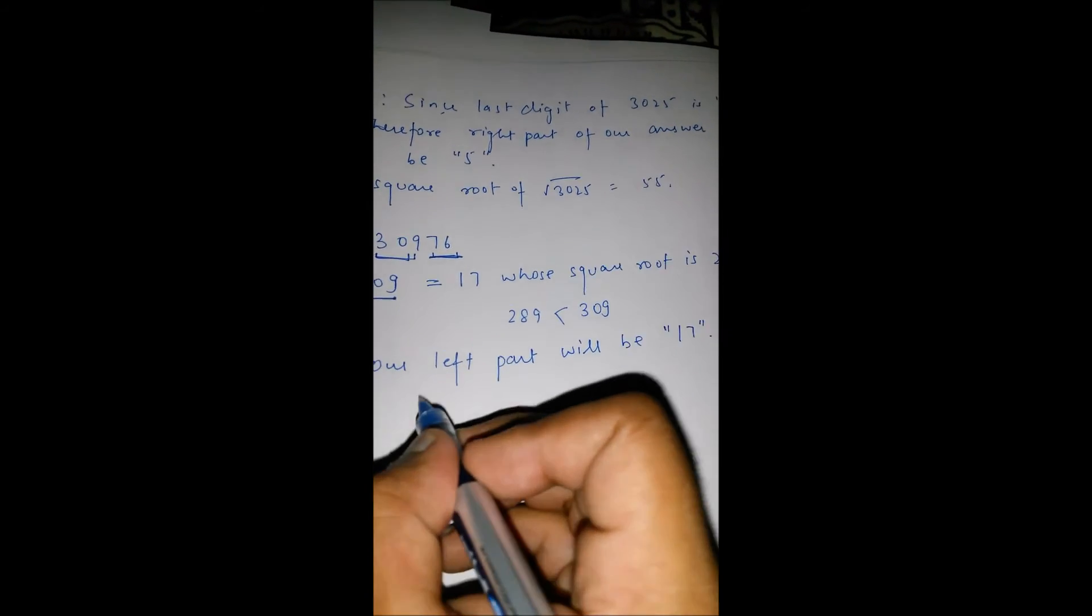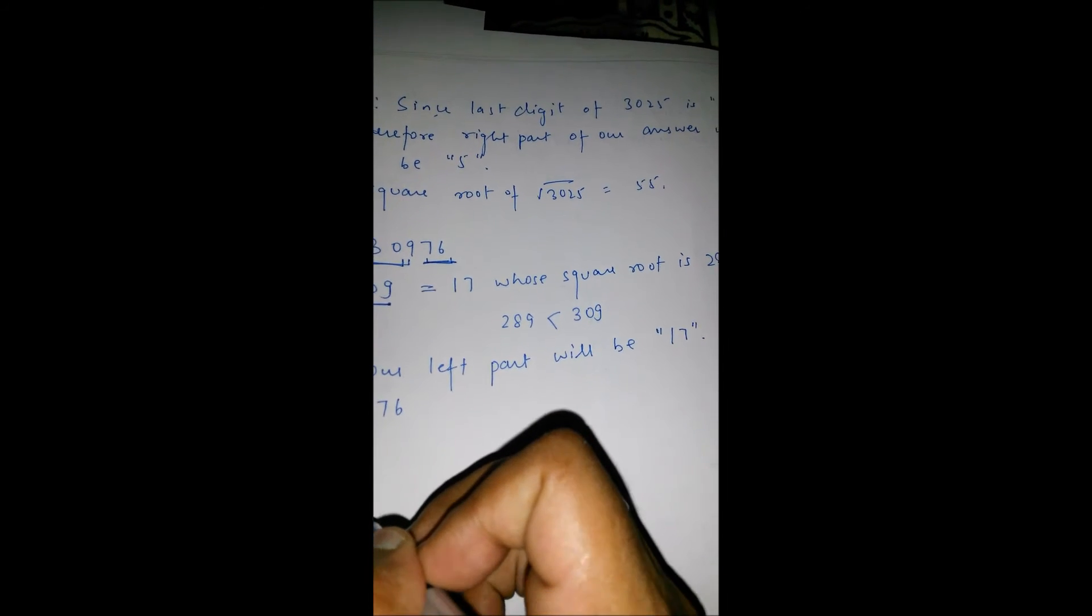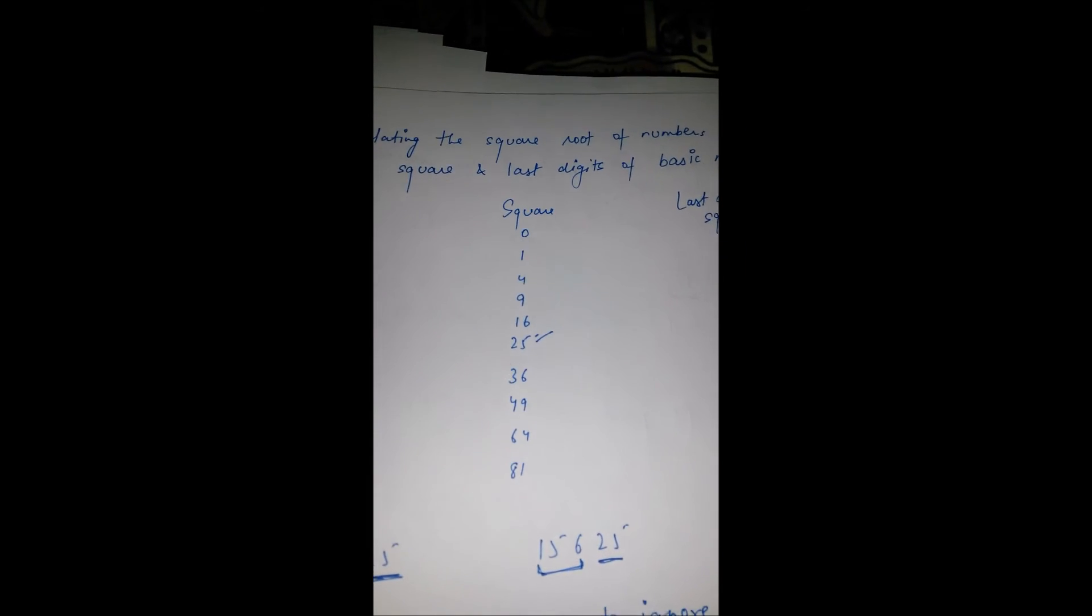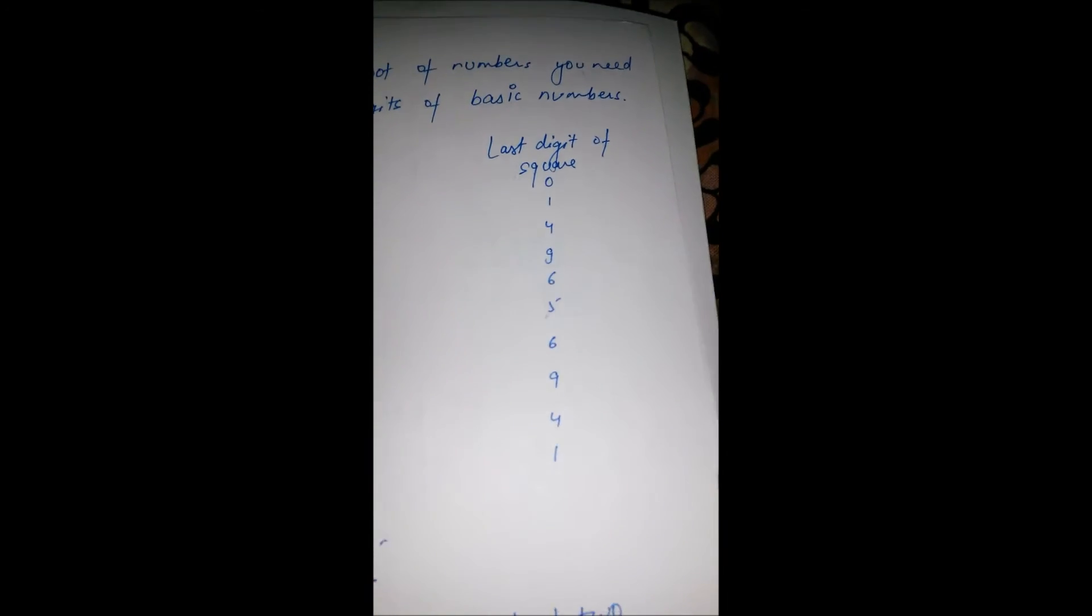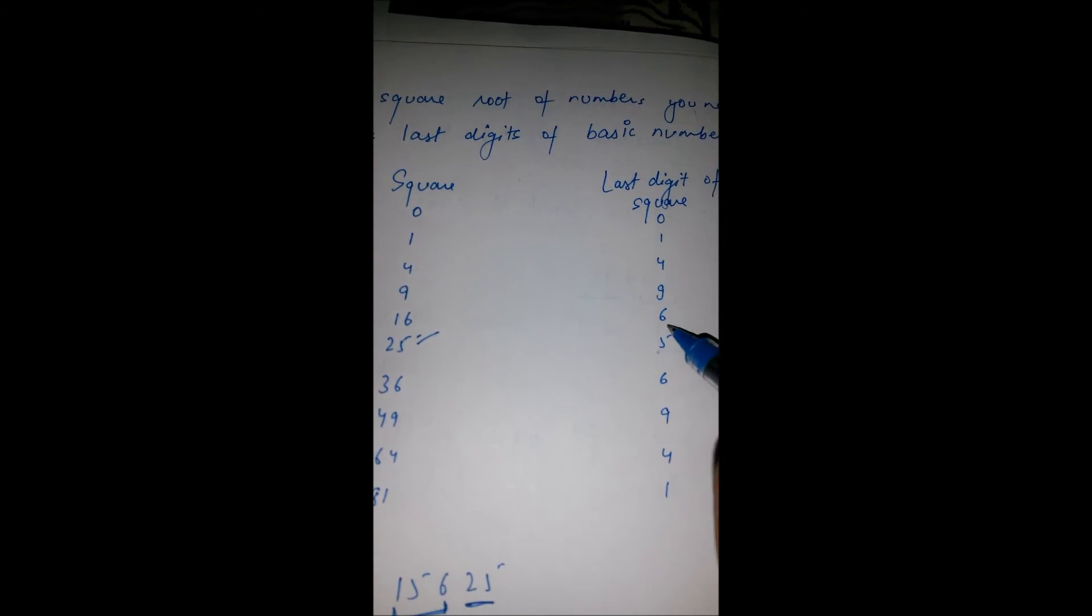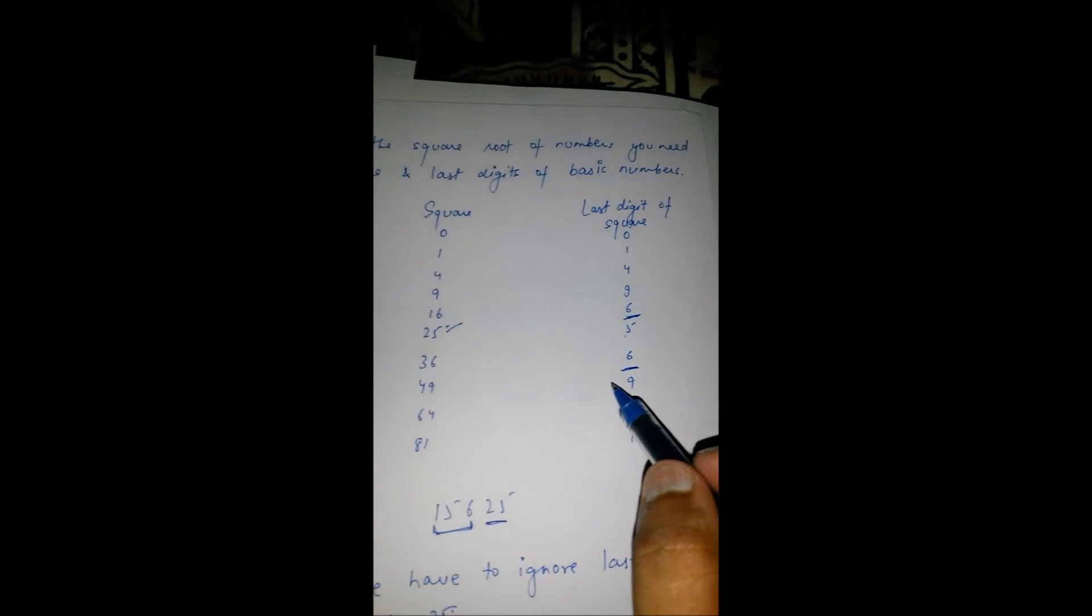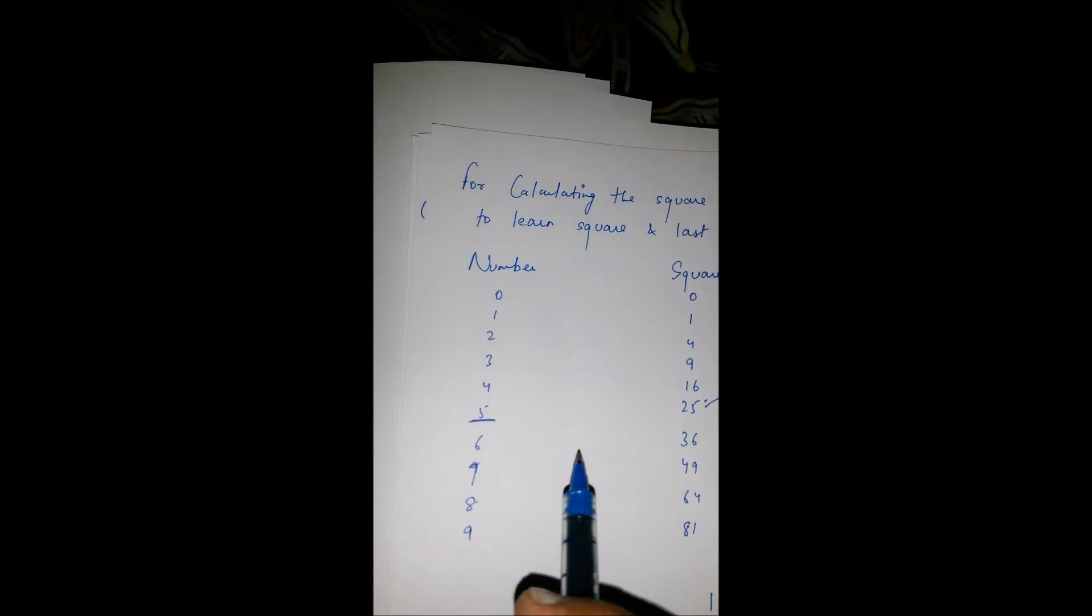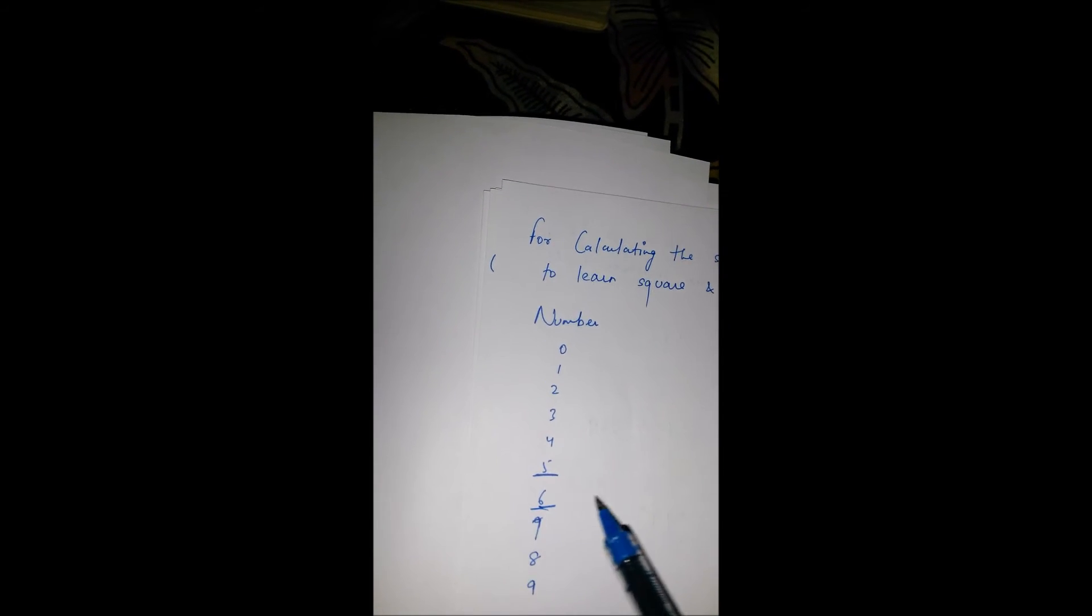Step 2: take 76. We have a table. Looking at 76, the last digit of square which comes 6 and 6 here. That means, either the last digit of square root will be 6 or 4.